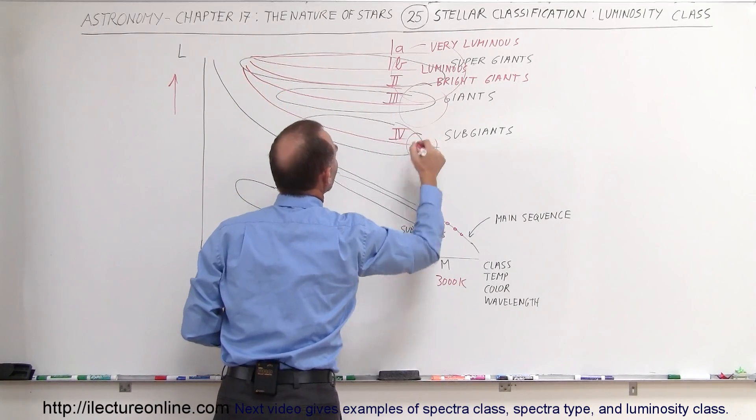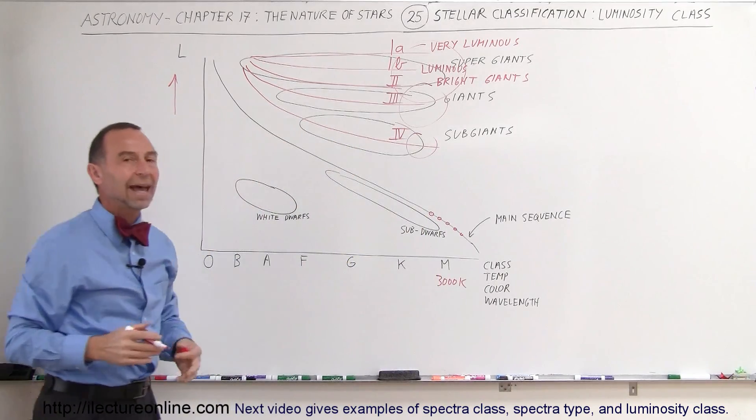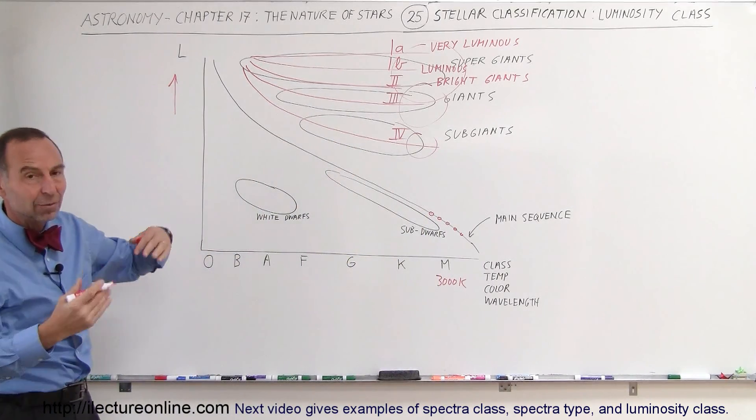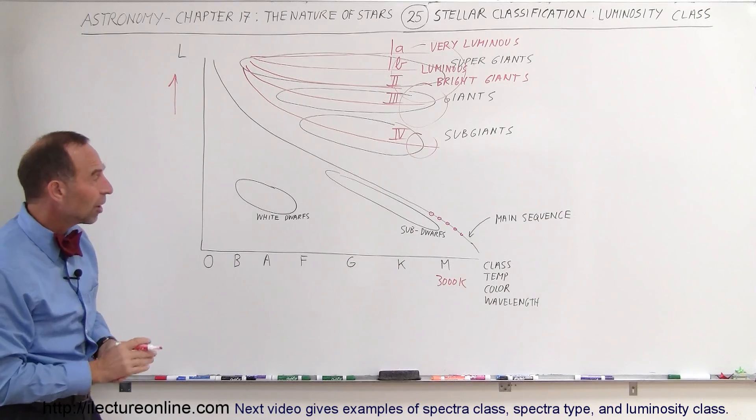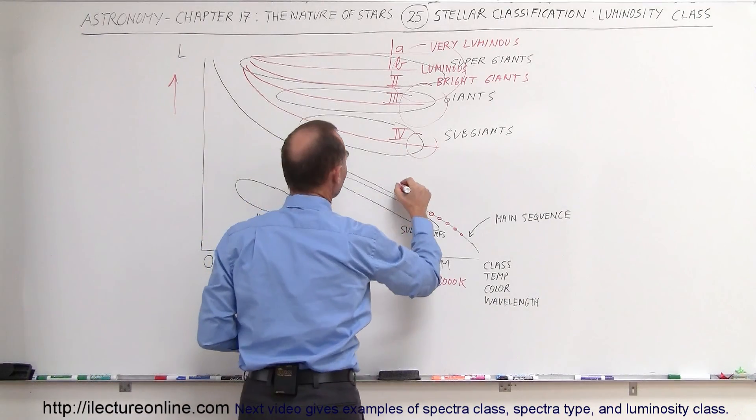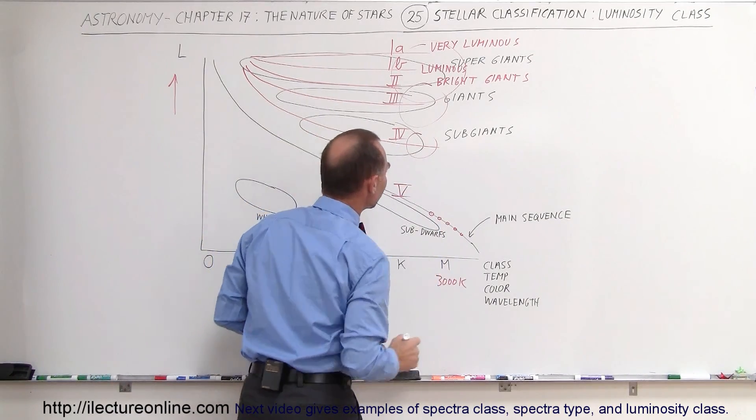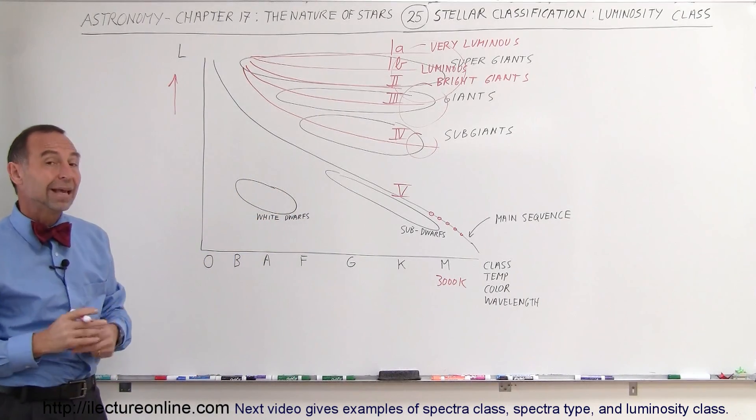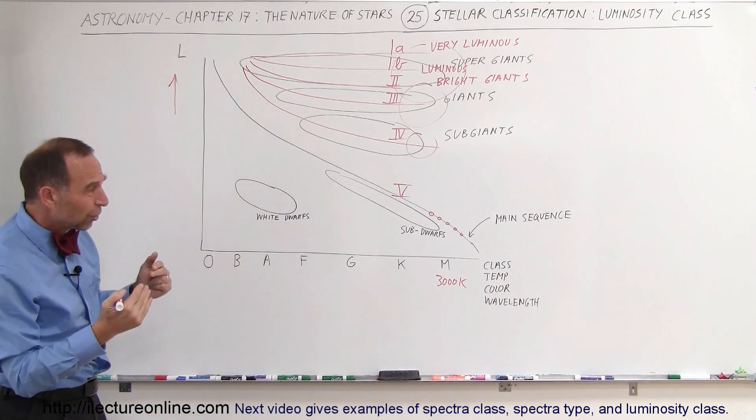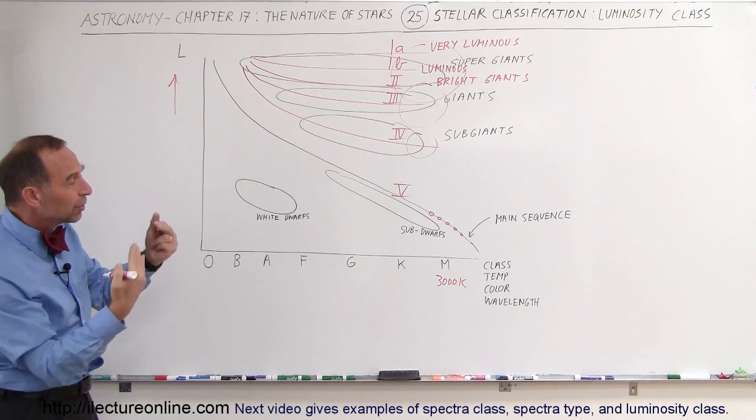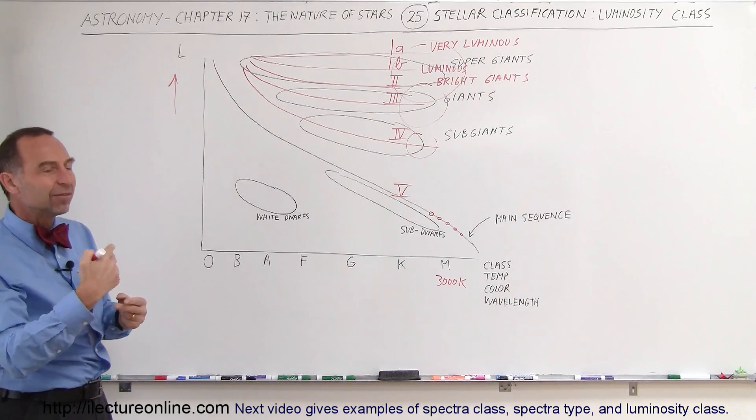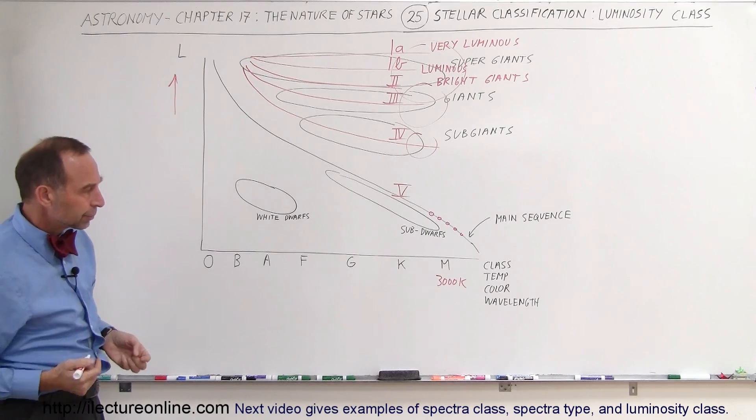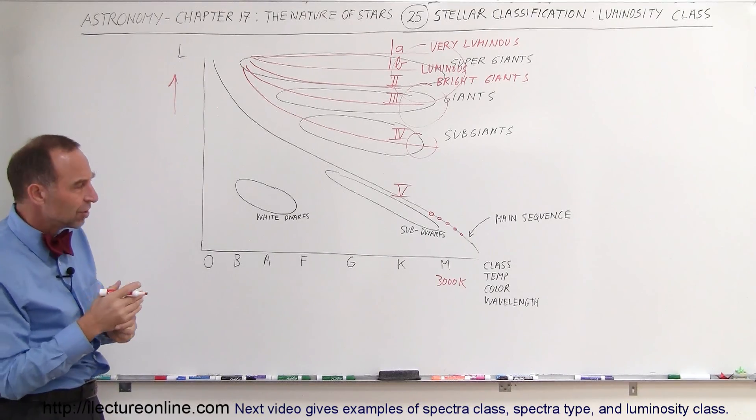Then finally we end up on the main sequence where of course the vast majority of the stars are, and so we called that luminosity class V. So when we talk about luminosity class V, we talk about a main sequence star. Then we realized there were some stars that were kind of like main sequence stars but not quite of the same size and colorization and spectrum as the typical main sequence stars.